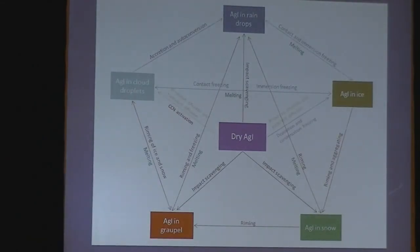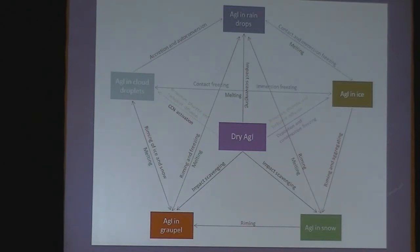This diagram is taken from Schuerdahl 2013, showing all the different microphysical pathways that take place in the model for the new species added to track the silver iodide — both in dry form and in each of the different hydrometeor species like raindrops, ice, snow, graupel, and cloud droplets. We include things like scavenging, melting, riming, and the different nucleation modes of immersion freezing, contact freezing, and so forth.